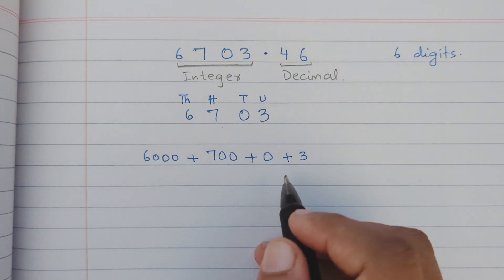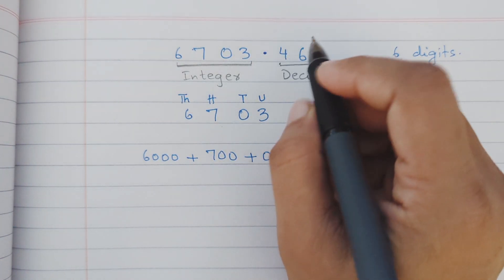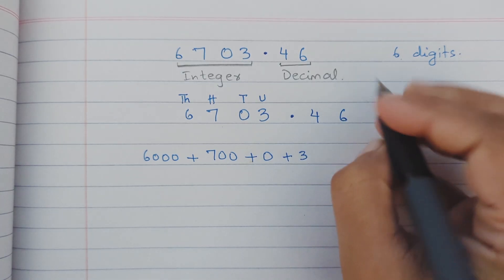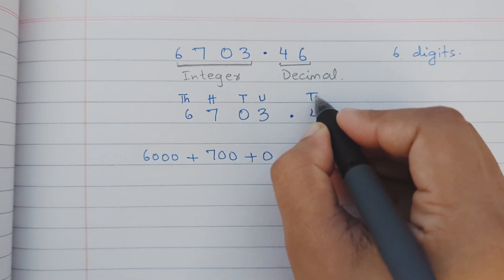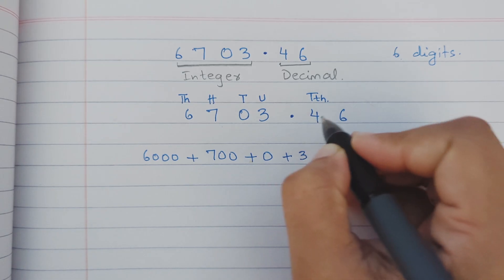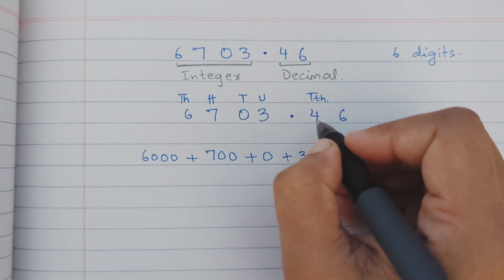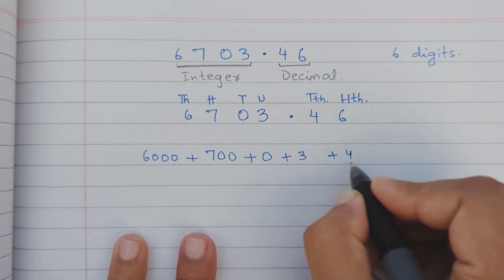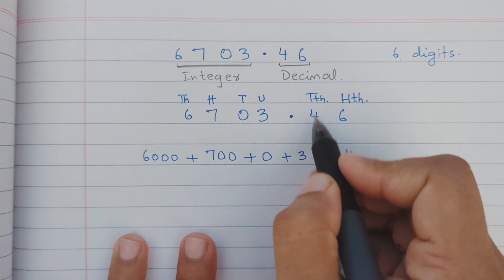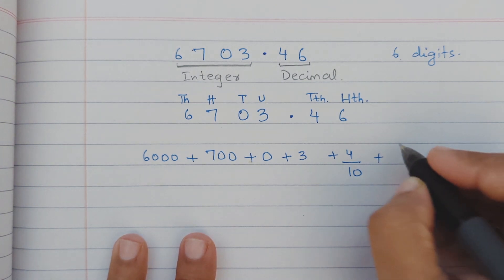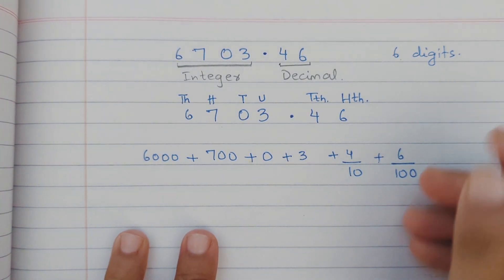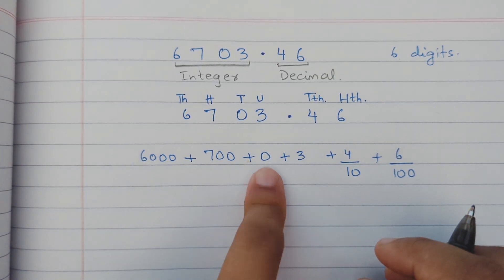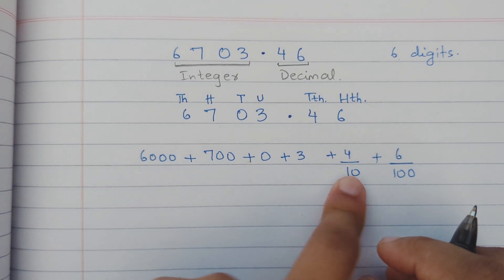Then comes the decimal part. The same sort of places continue here, but this four is tenths. The first place after the decimal is called tenths and the second one is hundredths. So the value of four would be four upon ten because it is tenths, and six hundredths means six upon hundred. The value of all these digits would be six thousand, seven hundred, zero, three, plus four upon ten, plus six upon hundred.